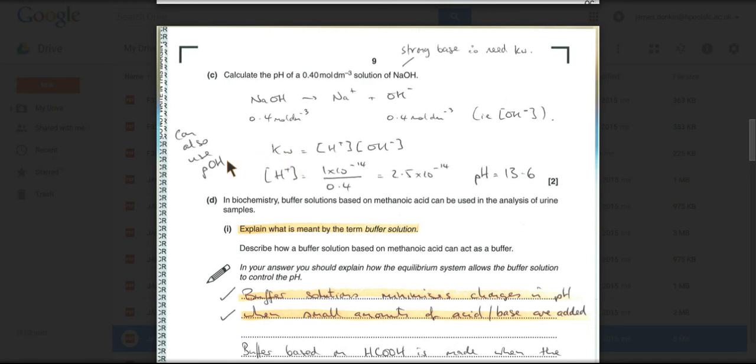We're going to bring Kw in. You can use the PoH method, but I prefer this one. So Kw equals the concentration of the H plus ion multiplied by the concentration of hydroxide ions. Rearrange for H plus, so we can minus log the answer. So that's 1 times 10 to the minus 14 Kw divided by the OH minus concentration, that 0.4. So we get an H plus concentration of that. Minus log, 13.6.